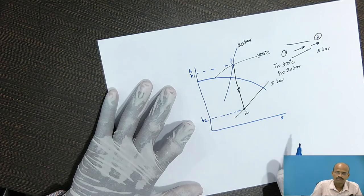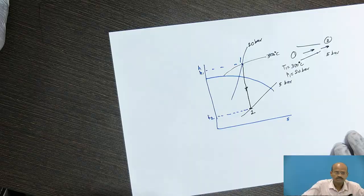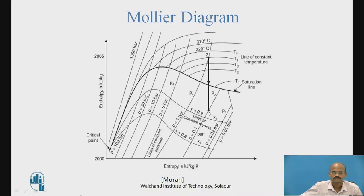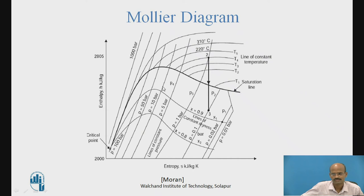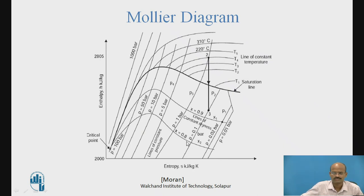I will now show the Mollier's diagram taken from Moran. This is the Mollier's diagram — enthalpy versus entropy. This is the saturation curve; the wet region is below it and the superheated region is above it. This is the critical point. These are the dryness fraction curves, the isothermal lines, and the isobaric lines. If this is the inlet to a convergent nozzle, taking the vertical projection gives the isentropic expansion, and you can locate point number two at the exit of the steam.